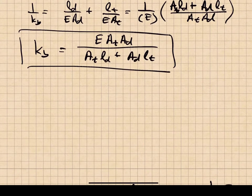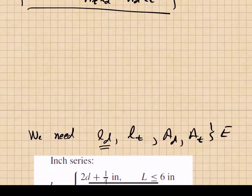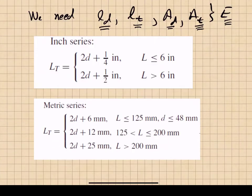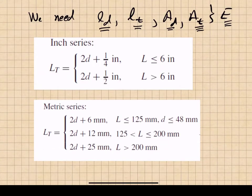To compute bolt stiffness, we need: the length of the unthreaded portion of the bolt in the grip (l_d), the length of the threaded portion in the grip (l_t), the nominal cross-sectional area A_d, the threaded cross-sectional area A_t, and the elastic modulus of the bolt. We use standard threaded lengths for bolts defined by standard equations.